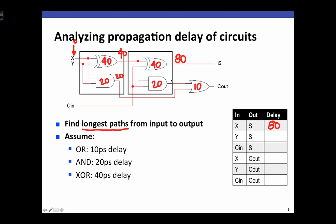If we look at carry out, there are two paths that lead from x to that output. One path arrives at the bottom input of the OR gate 20 picoseconds after x changes. The top input arrives 40 picoseconds after x changes, so its output stabilizes at 60 picoseconds. Since we're looking for the longest path, we consider when both inputs are stable — at 60 picoseconds — so carry out stabilizes 70 picoseconds after x changes, giving x to carry out a delay of 70 picoseconds.